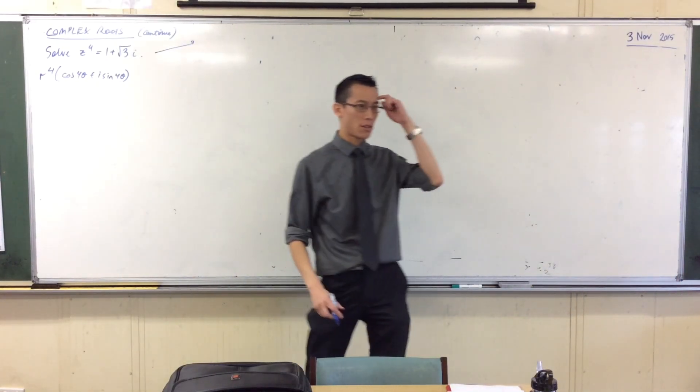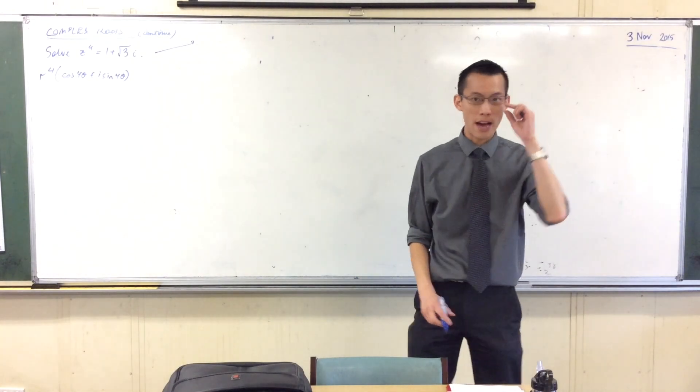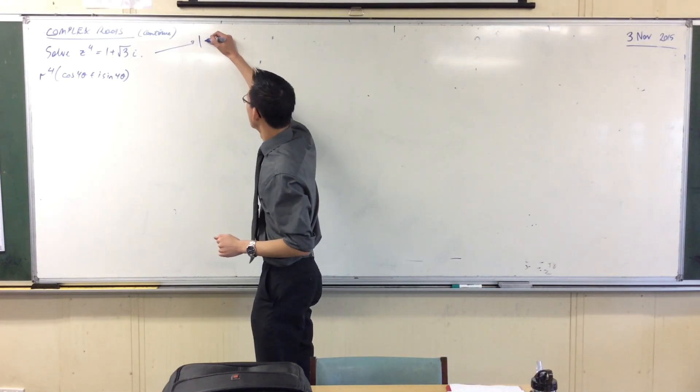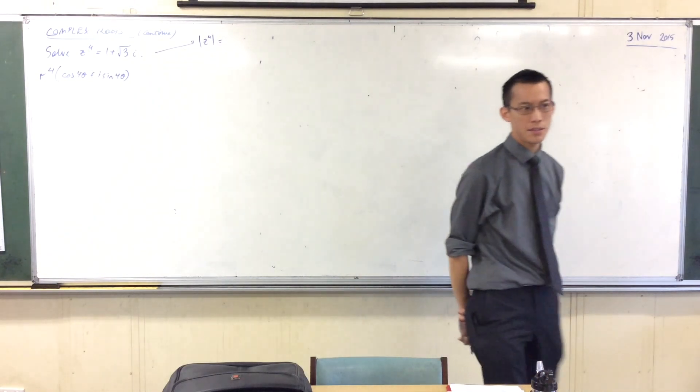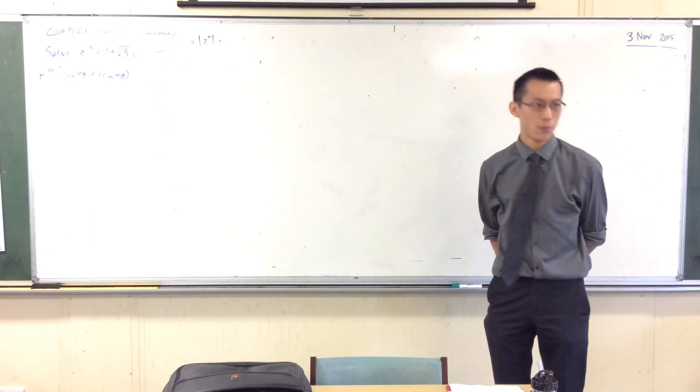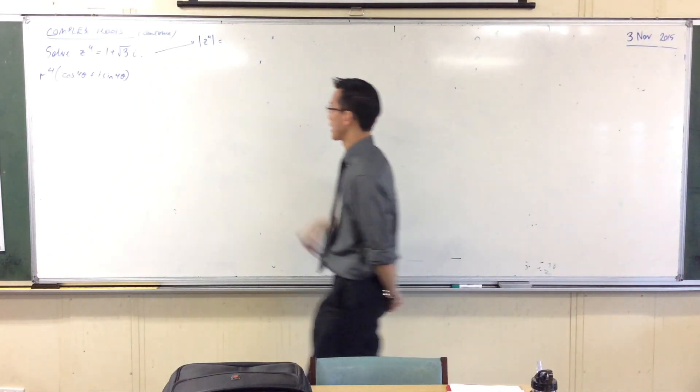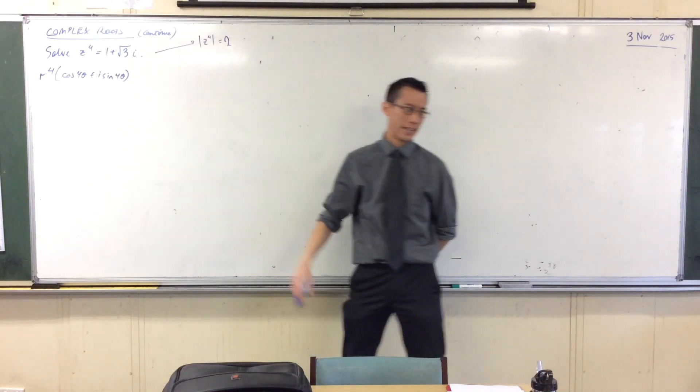So to write 1 plus root 3 i in mod arg form, first I'll work out the modulus. The modulus of z to the 4 is, think about it, 1, root 3, this is 2. You will get this guy coming up over and over again.